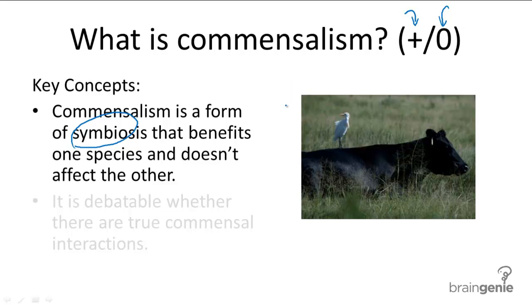A common example of commensalism is the egret and cattle. In this relationship, the egret will sit on the cattle's back and feed on the insects that are flushed out of the grass as the cattle are grazing. You can clearly see that the egret benefits from this relationship because it is getting food, whereas the cattle just seem indifferent to the egret sitting there.